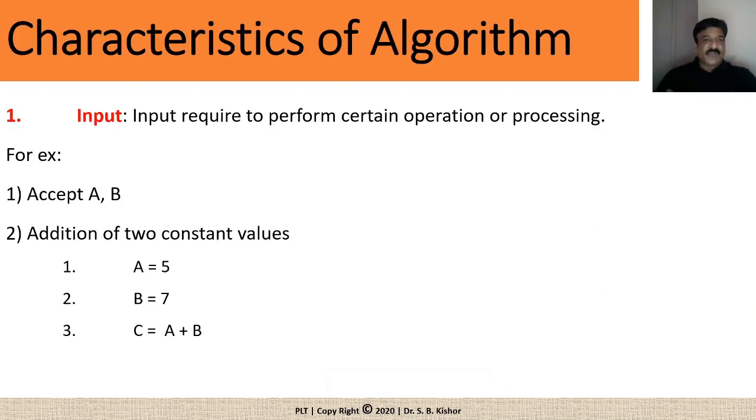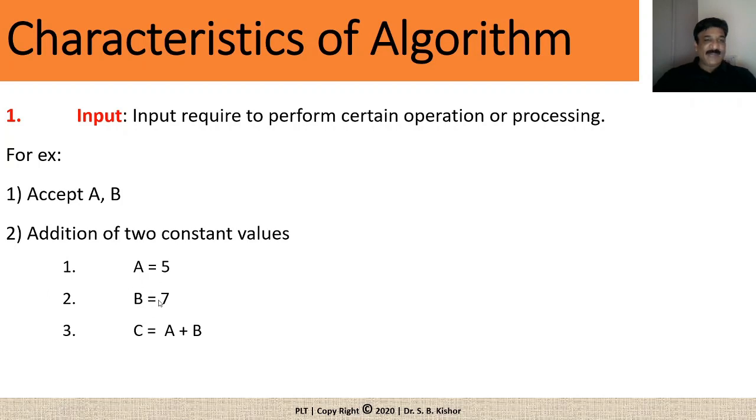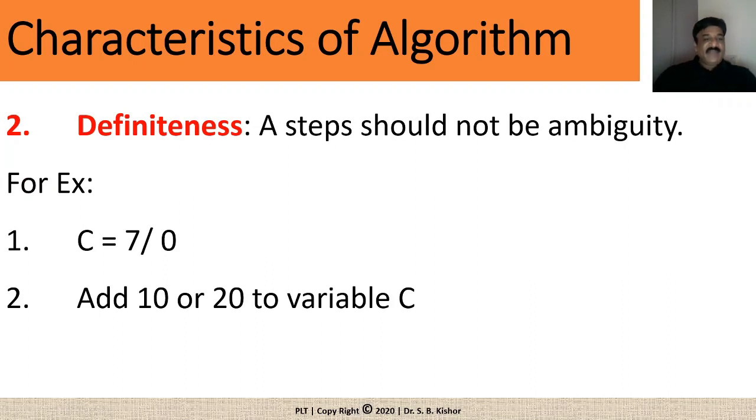Now, what are the various characteristics of good algorithm? You need to provide certain input while performing certain operations. If you are already aware about those two numbers, then in that case, what you need to do? You need to assign those values to a certain variable. So, you are going to accept values only when the values are unknown during writing a program. Second step is definite. Every step should be proper. It should not be ambiguous. There should be a proper and clear statement. For example, if you are going to write the statement something like this, 7 divided by 0 which is never going to be possible. Similarly, if you are simply saying add 10 or 20 to a variable, again, it is not clear whether you need to add 10 or 20. So, such kind of ambiguous statements should not be there while writing an algorithm.